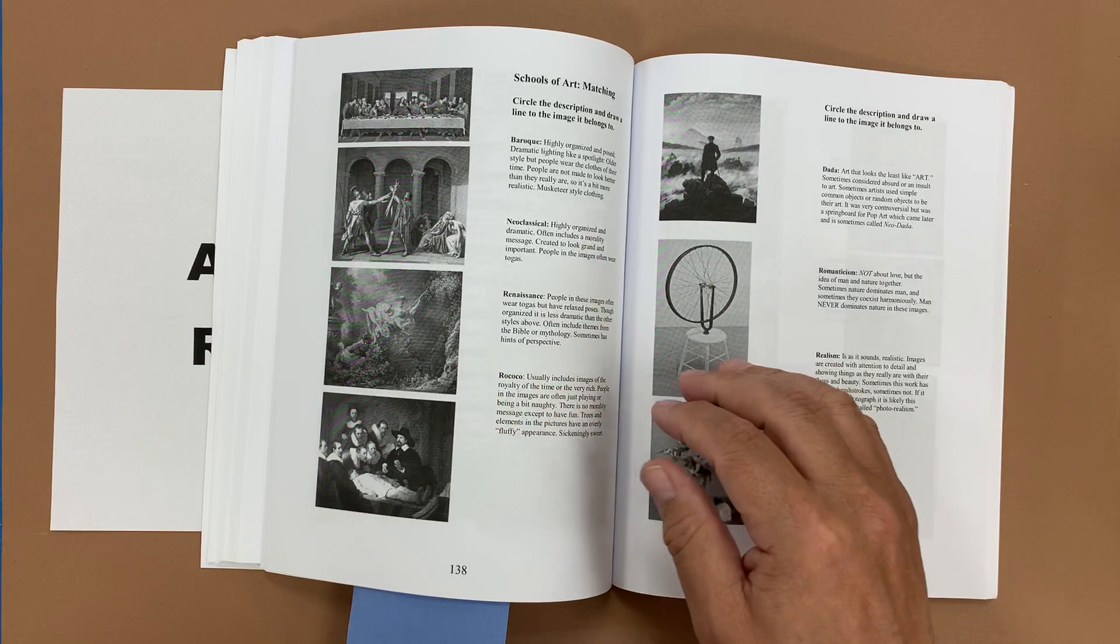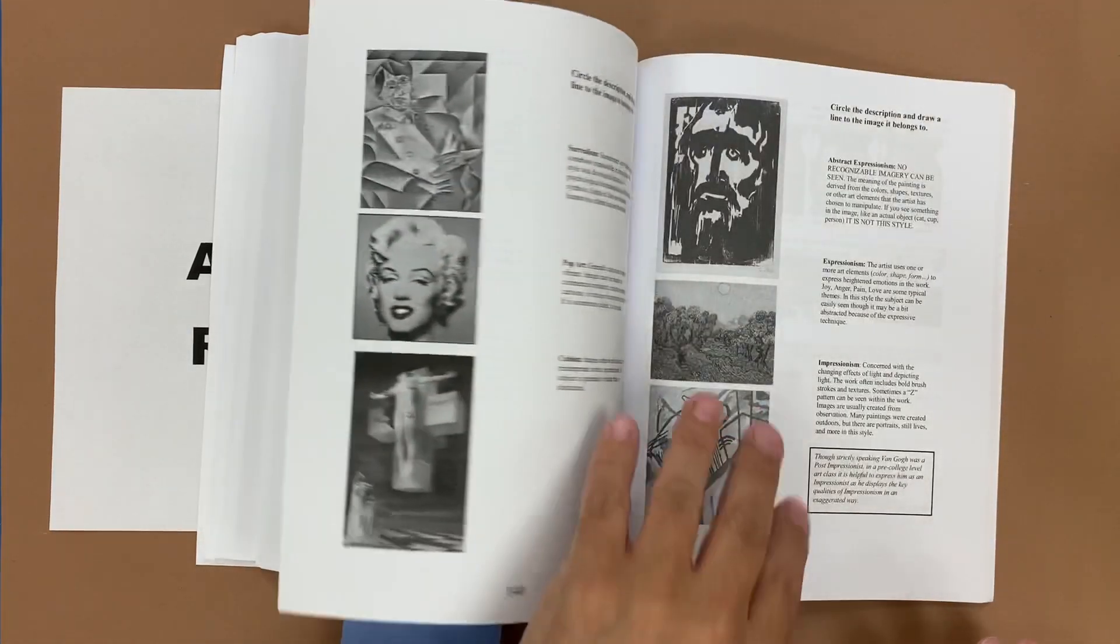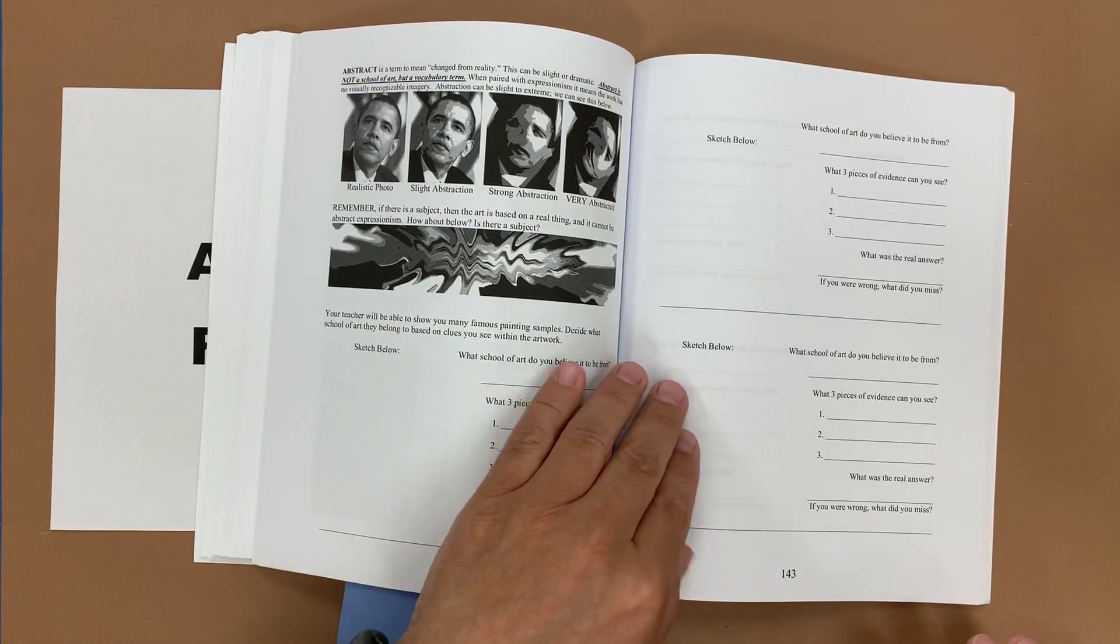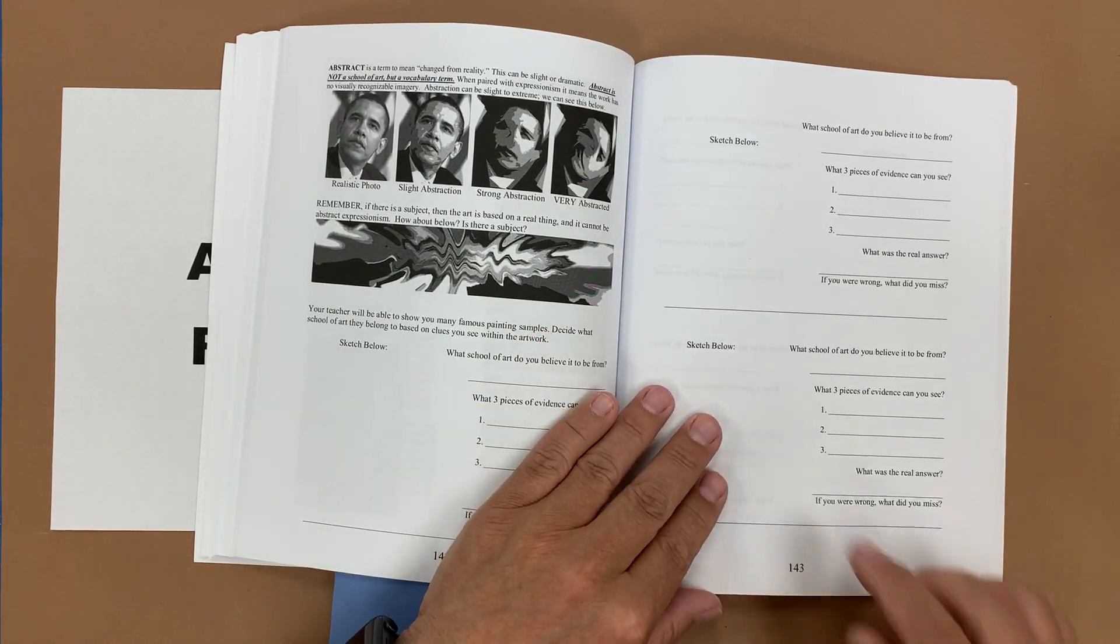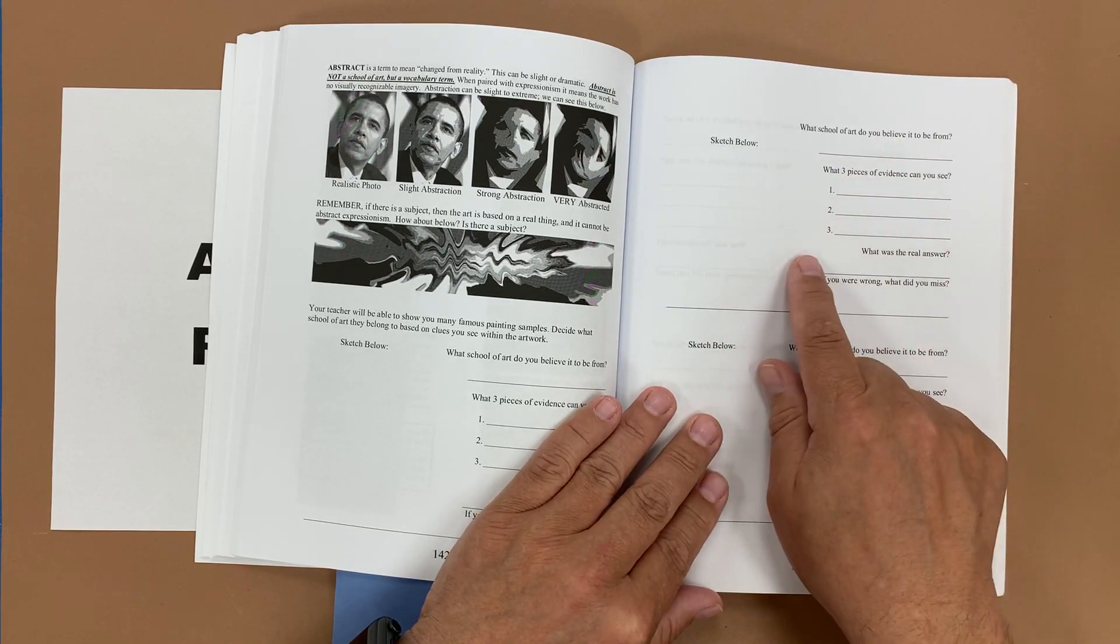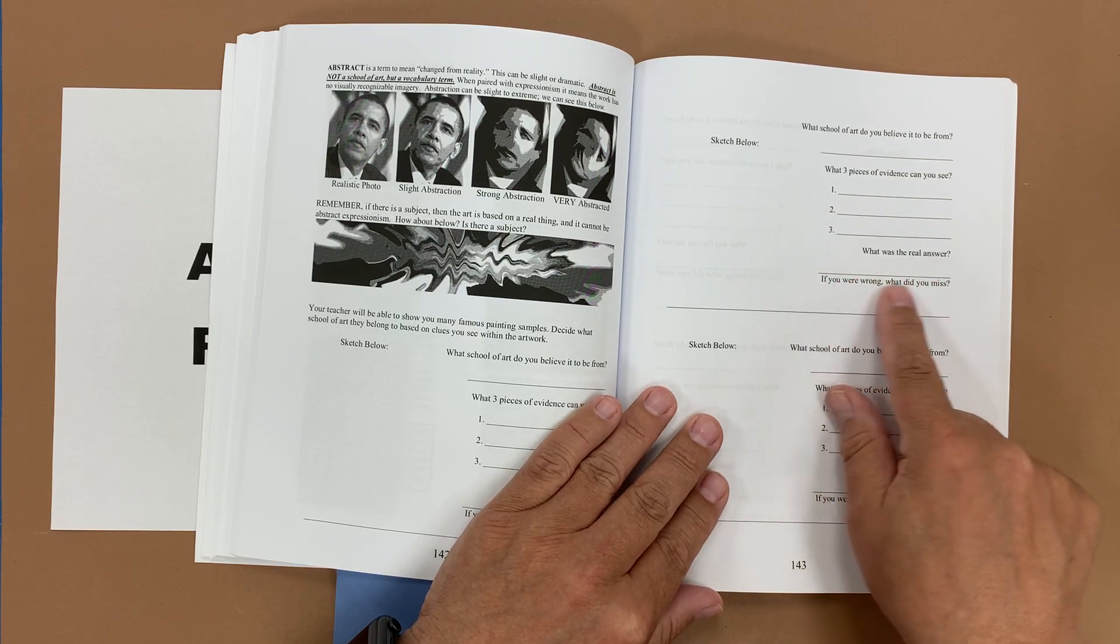Here we have some matching so that again they can start to identify the different movements of art. And then we can have some pages where we break down the work so they would do a quick thumbnail. What school of art do you believe it's from? What three pieces of evidence do you have? And what was the real answer?